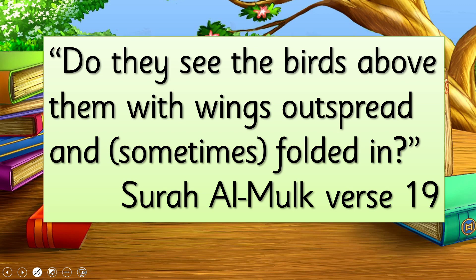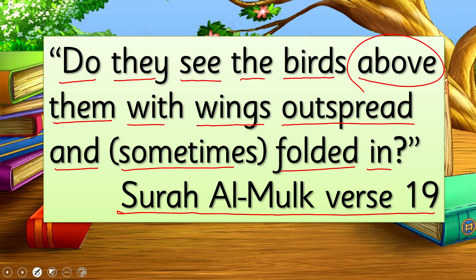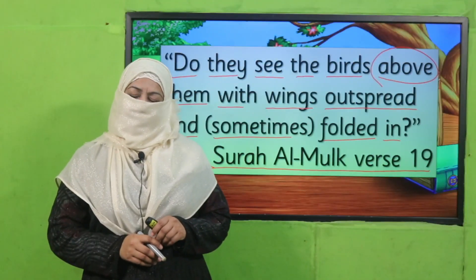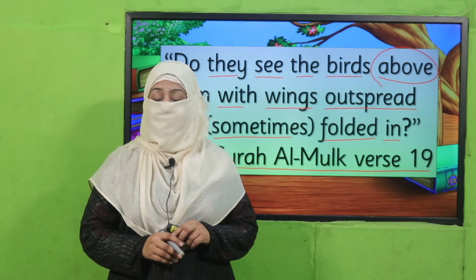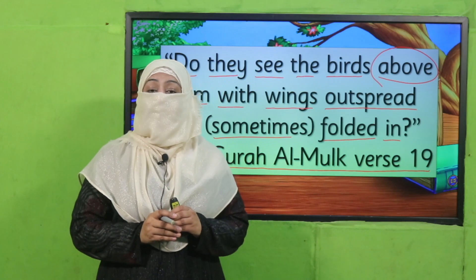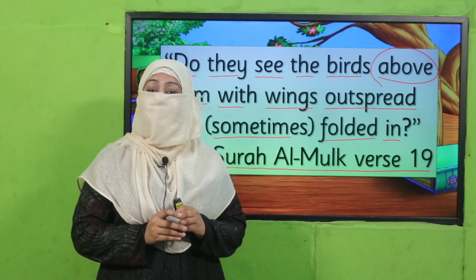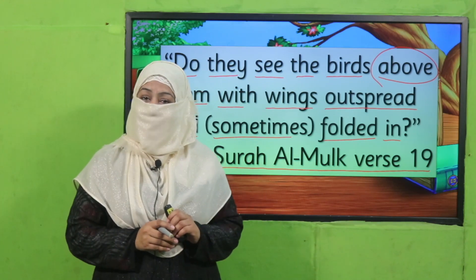Let's start with the name of Allah Subhanahu wa Ta'ala. Allah mentions in the Quran, Surah Al-Mulk, verse 19: 'Do they see the birds above them with wings outspread and sometimes folded in?' This beautiful verse is telling us that when we look around us, we find many signs of Allah Subhanahu wa Ta'ala — things which tell us there is a power, and that power is Allah Subhanahu wa Ta'ala.